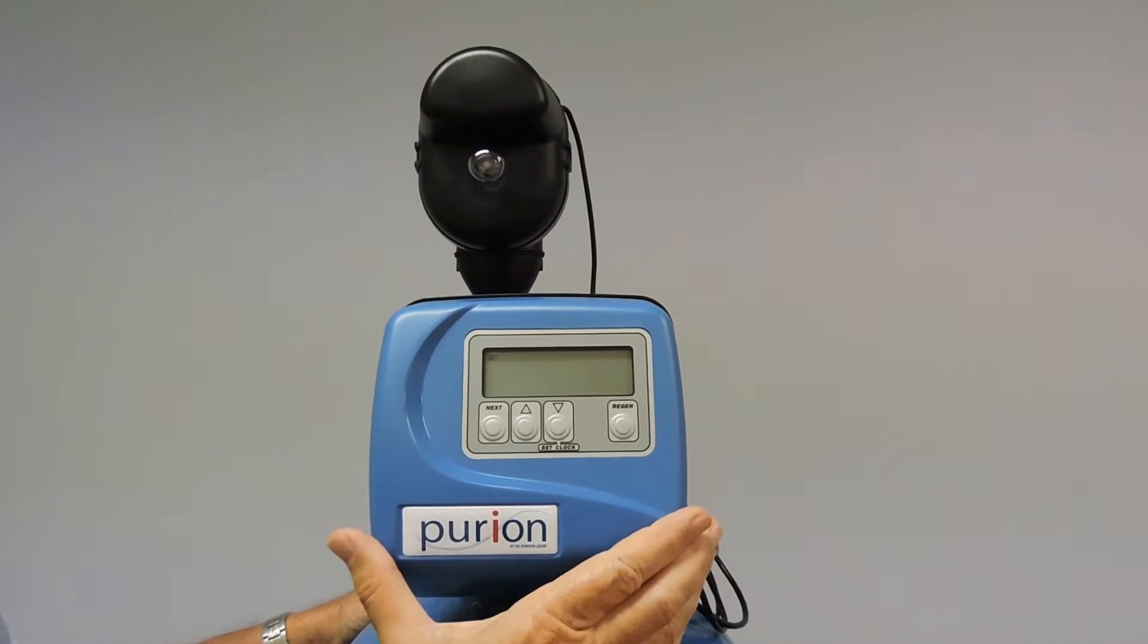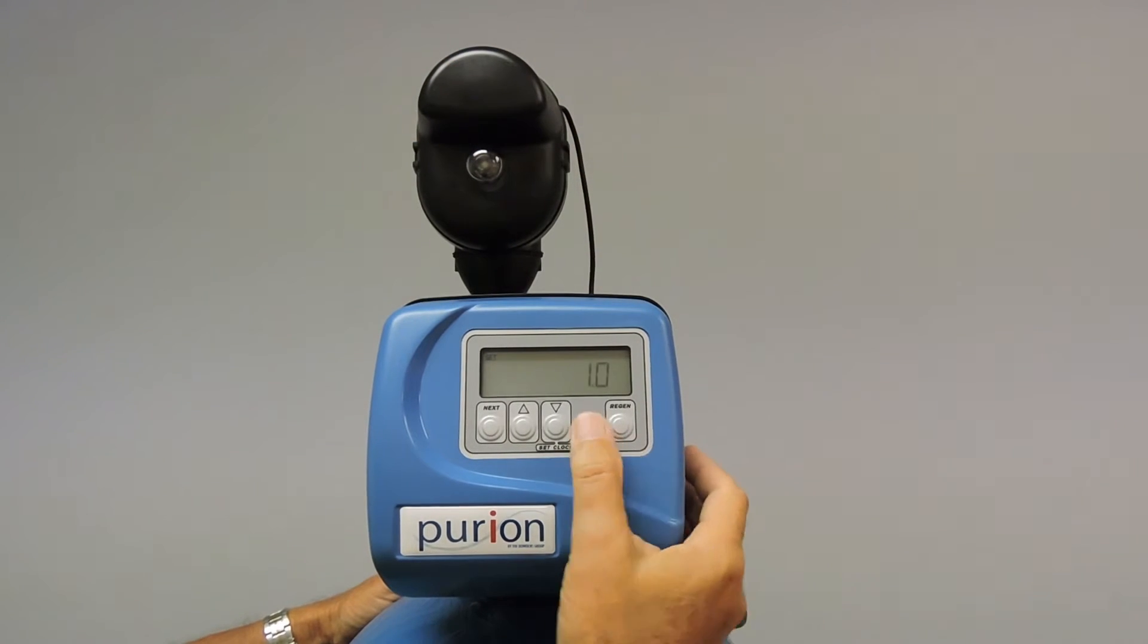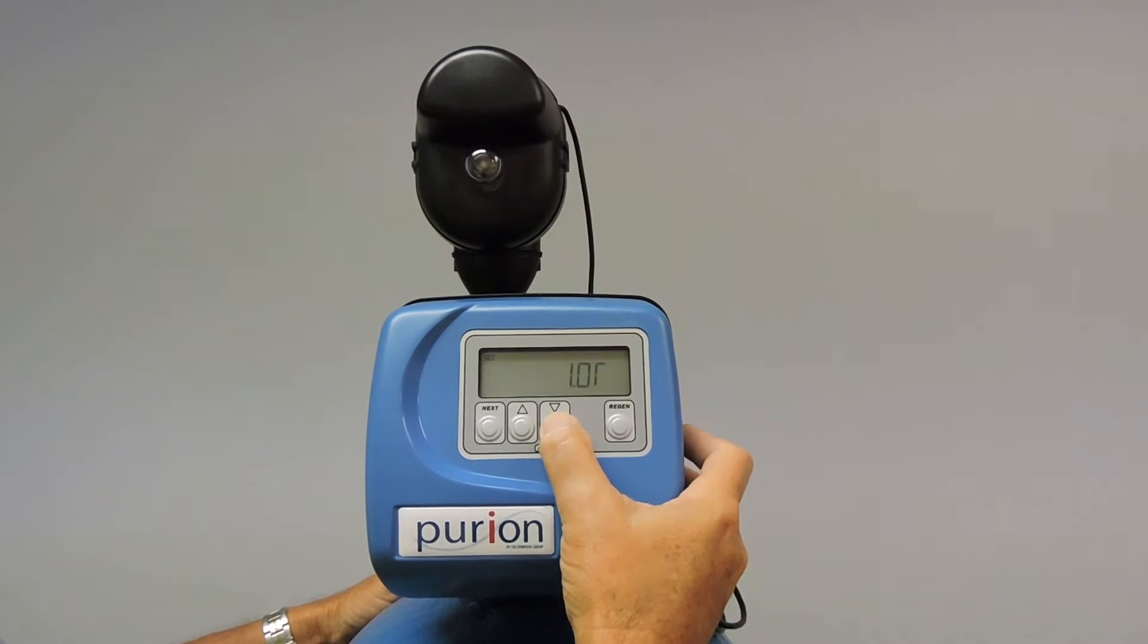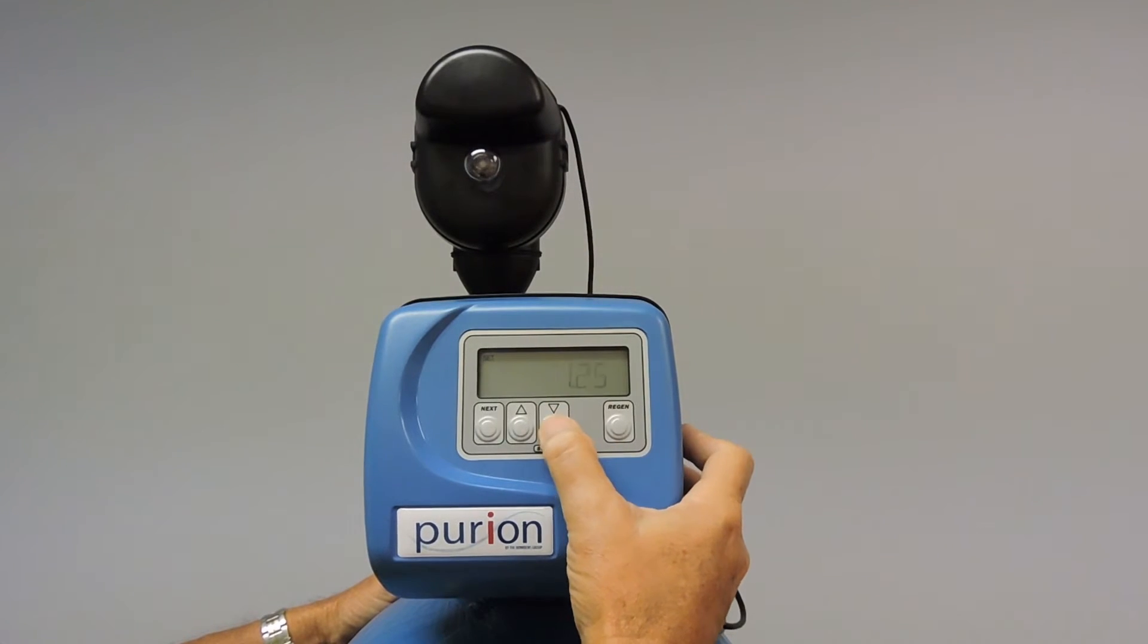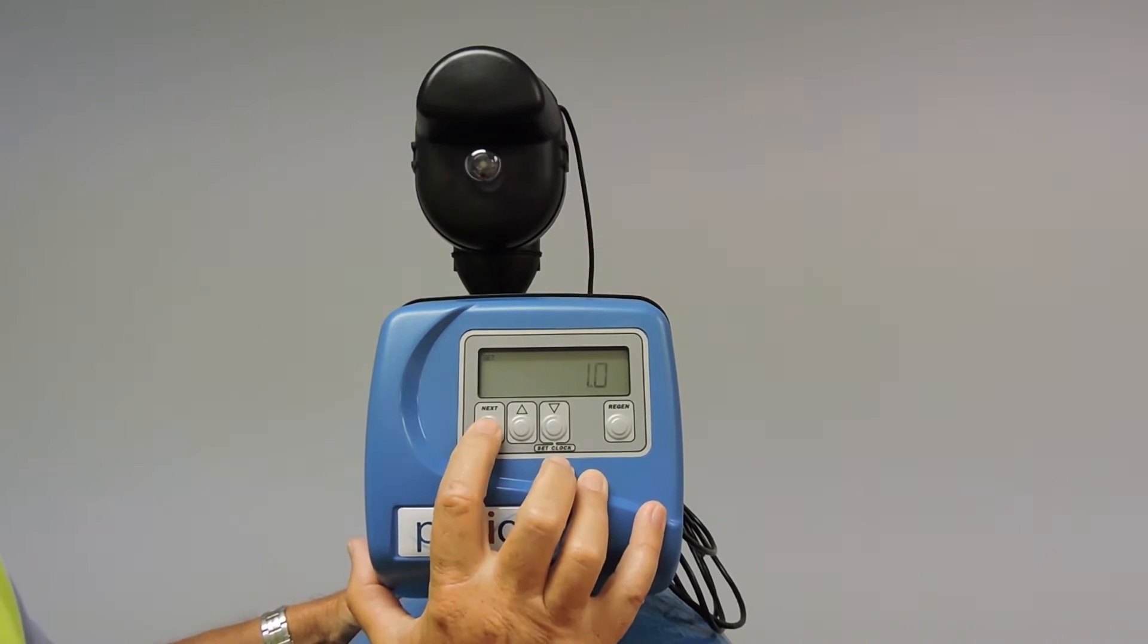That brings us into our valve size. Once we select our valve size, in this case it's a WS1. The options are twin alternating, 2 inch, inch and a half, inch and a quarter, and back to our 1 inch which we accept. To accept it the next button is pressed.